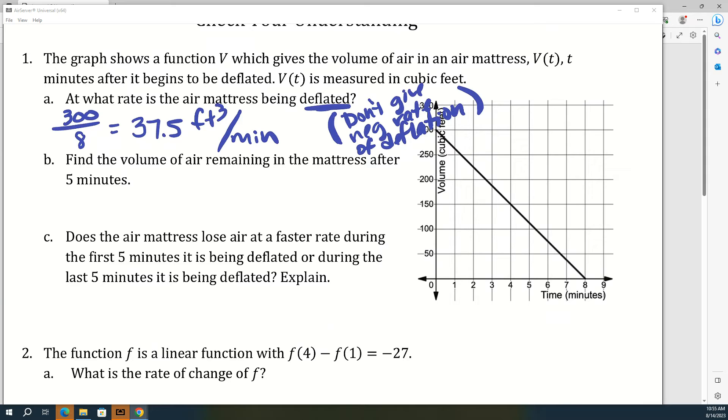If it asks at what rate is the volume changing, then you would say negative. It's kind of a lot to keep straight. And then b, find the volume of the air remaining in the mattress after five minutes. So I know at the beginning there's 300 cubic feet of air. Okay, so I'm going to subtract some slopes. How many slopes should I subtract? For five minutes, five slopes. And so that is going to be 112.5 cubic feet of air after five minutes.